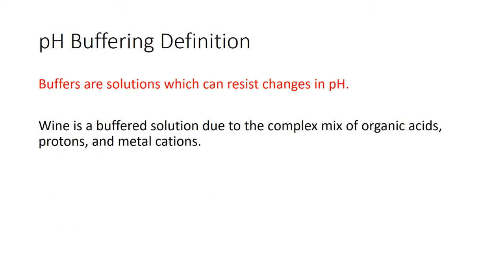Getting a little more difficult here: pH buffering. Buffers are solutions that can resist changes in pH, and almost everything involved in life is a buffered solution. They're complex solutions full of lots of different ions. Wine is a buffered solution because it has a complex mix of organic acids, protons, and metal cations — so different things with different charges are floating around.